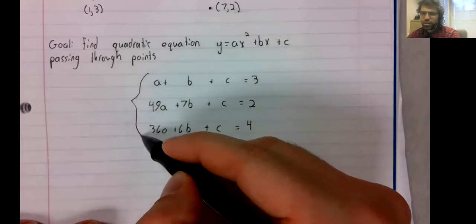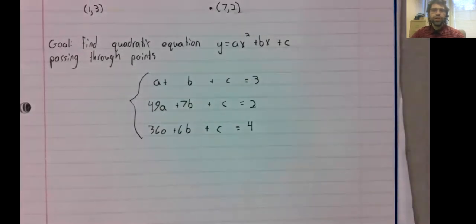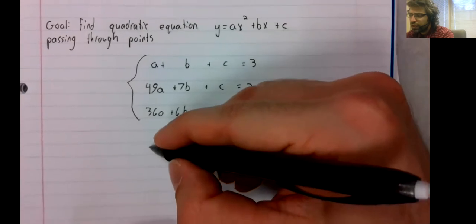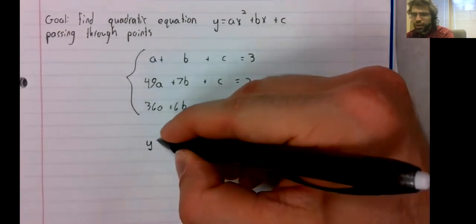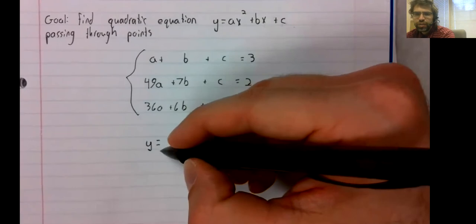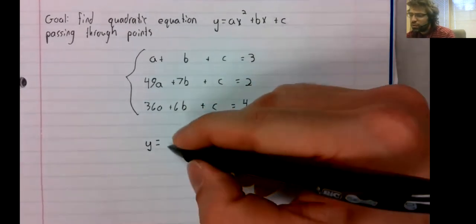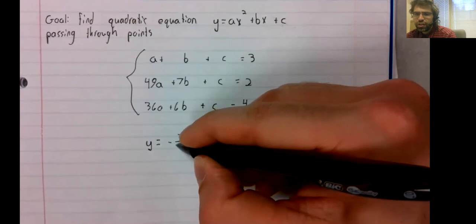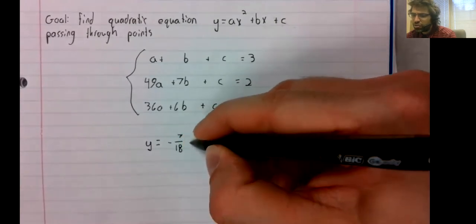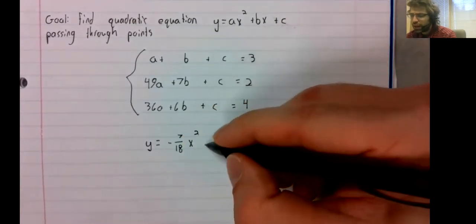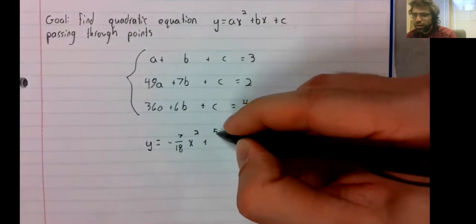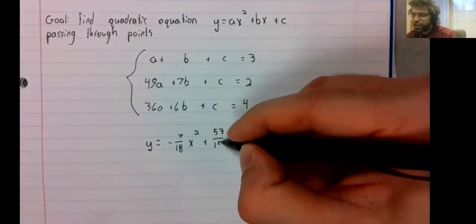And we can solve this using Gauss-Jordan elimination. In this equation, when the dust clears, we get the equation y equals negative 7/18x squared plus 53/18x.